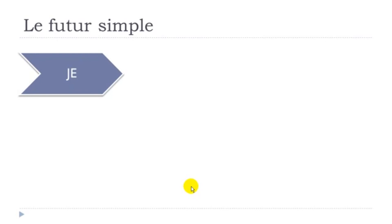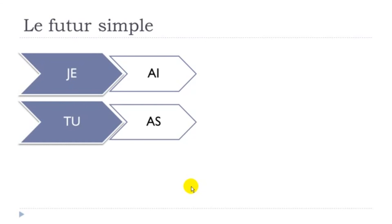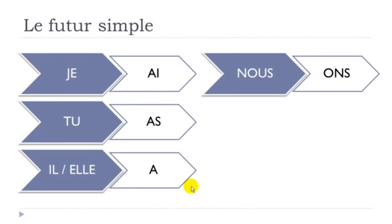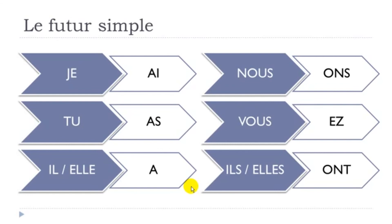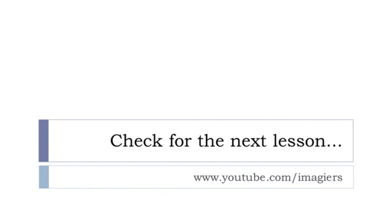To recap the endings one more time: 'je' → AI, 'tu' → AS, 'il/elle' → A, 'nous' → ONS, 'vous' → EZ, 'ils/elles' → ONT. That's it — now you can construct a futur simple. Congratulations!